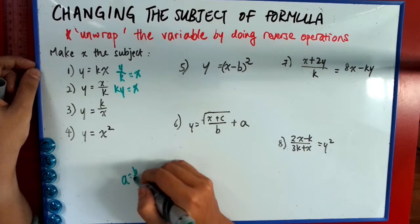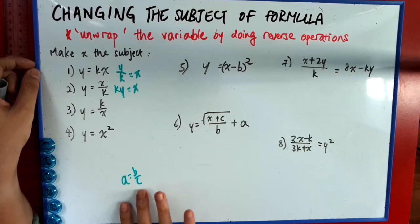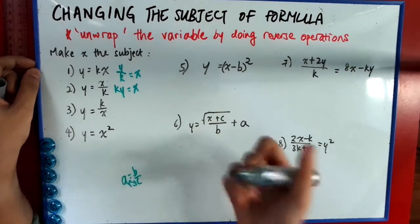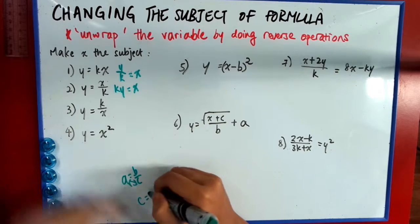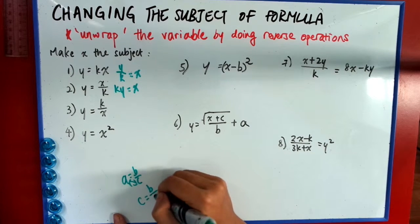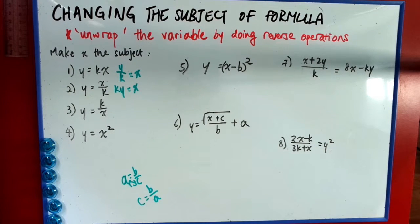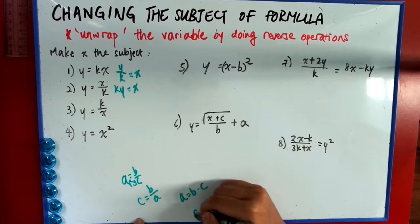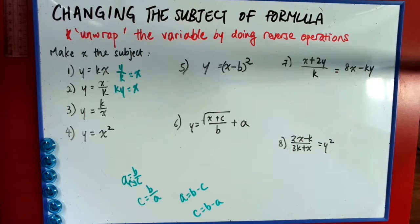Basically, if you have a equals b over c, you can interchange a and c, and you will get the equivalence. That means the equation will still be correct. It would not be off balance. It will still be a valid equation. a equals b over c, c is b over a. Same for minus. a equals b minus c, c is b minus a.